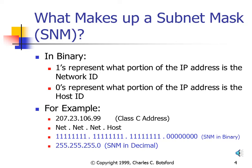One of the easiest ways to understand a subnet mask is to view it in binary. Ones in the subnet mask indicate which portion of the associated IP address is the network ID, and zeros in the subnet mask indicate which portion of the associated IP address is the host ID.